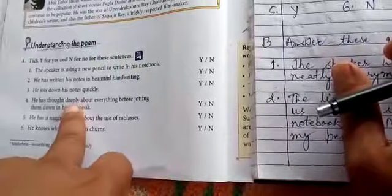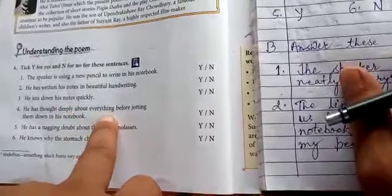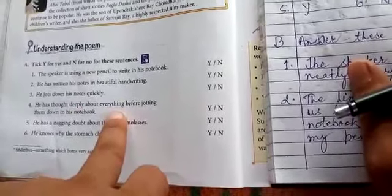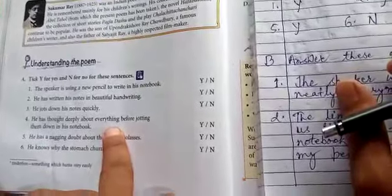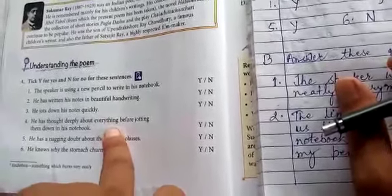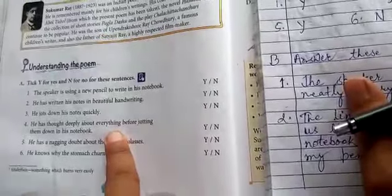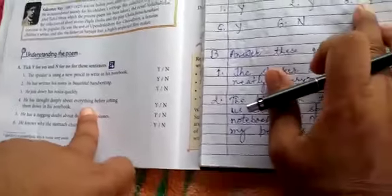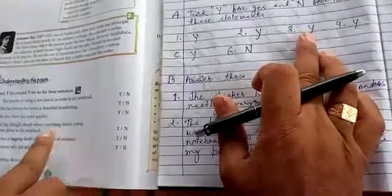He has thought deeply about everything before jotting them down in his notebook. As you know the poet wonders everything whatever he sees. That's why this one is also correct. That's why write down here, yes.